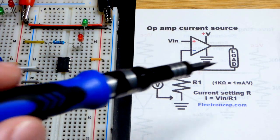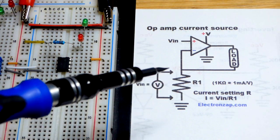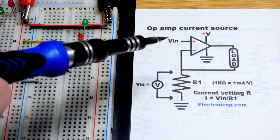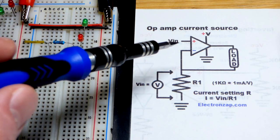We're going to be able to set a current through a load based on the amount of resistance we use and the voltage that we give in.